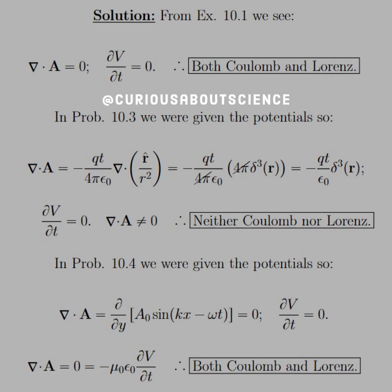For problem 10.4, V was 0, so we know the time derivative equals 0. We were also given a sinusoidal in the Y direction, but it's a function of X, so the divergence leads to 0. We have 0 on both sides, so again this is both Coulomb and Lorenz gauge. Easy enough.